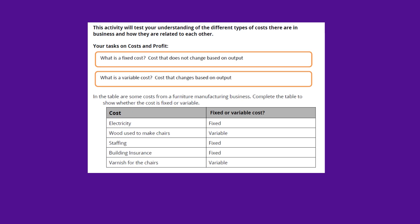We're going to look at this first example, understanding the costs involved in business and how businesses can make a profit. Looking at the first one, you've been given a definition. What is a fixed cost? Costs that do not change based on output. What is a variable cost? A cost that changes based on output. Below, we've been given a few examples where we need to define which are fixed and which are variable costs.